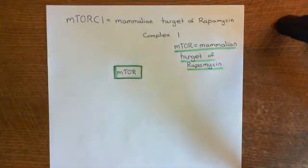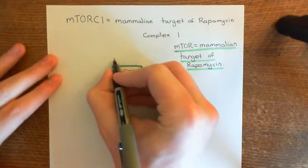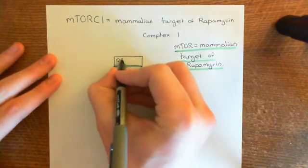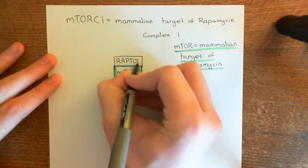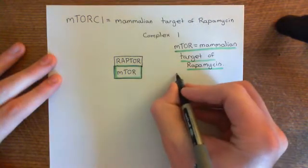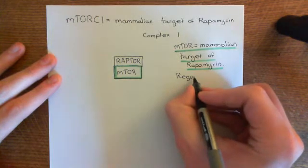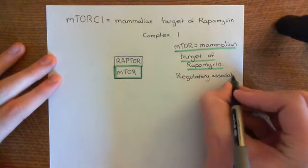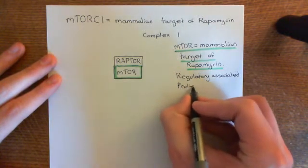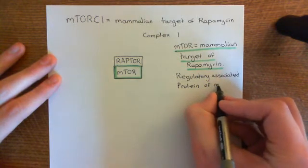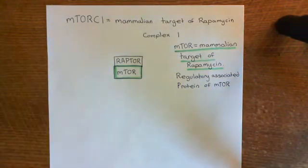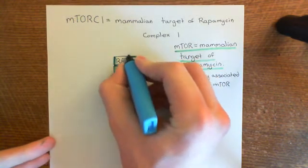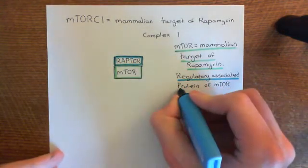The next protein we'll add onto mTOR is known as RAPTOR — R-A-P-T-O-R. This stands for the regulatory associated protein of mTOR: R for regulatory, A for associated, P for protein, and TOR from mTOR. We'll cover the regulatory associated protein of mTOR in blue, bound to the mammalian target of rapamycin within this mTORC1 complex.